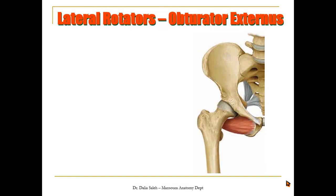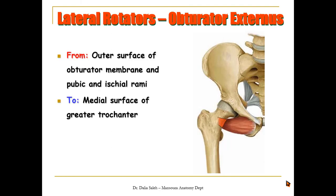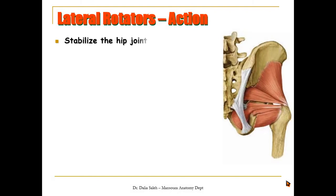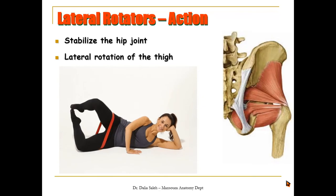The last muscle is the obturator externus, which I previously discussed with the adductor group. It originates from the outer surface of the obturator membrane and the pubic and ischial rami, and inserts into the medial surface of the greater trochanter. It passes behind the neck of the femur and is closely adherent to it; it is innervated by the obturator nerve. To summarize the action of the lateral rotators of the hip joint: they stabilize the hip joint, lying close to it from all aspects, and as their name implies, they laterally rotate the thigh, especially during abduction.